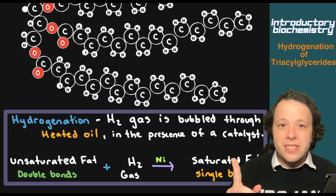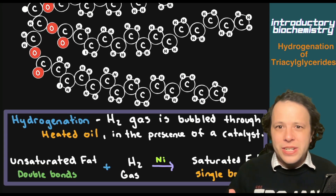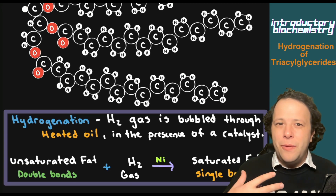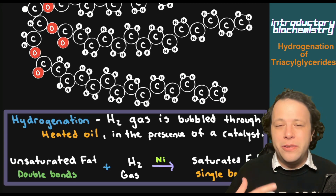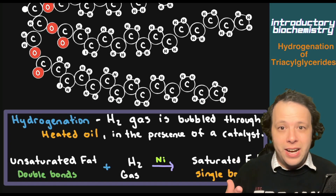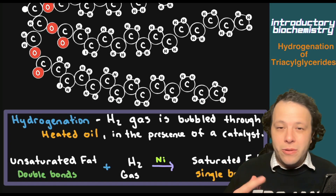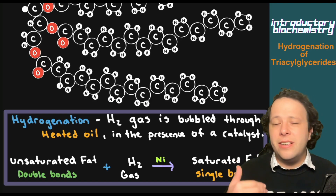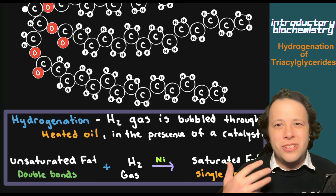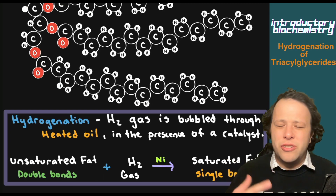So just to go through the definition: hydrogenation is when we take hydrogen gas and we bubble it through a heated oil. So if you have an oil on your stove and you heat it up really hot, what they do is bubble hydrogen through it in the presence of a catalyst — usually nickel, for example, because that's usually a little cheaper to use.